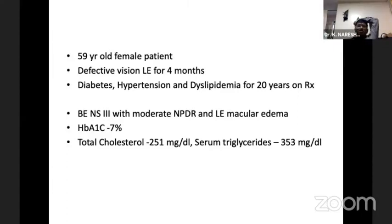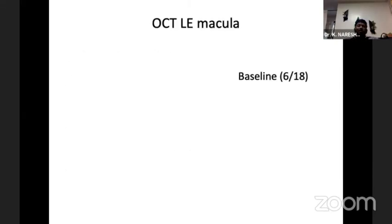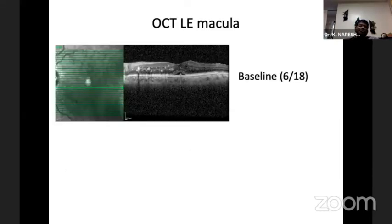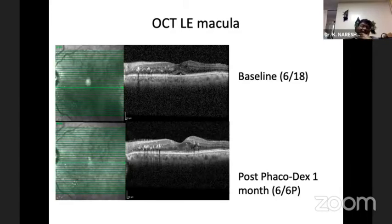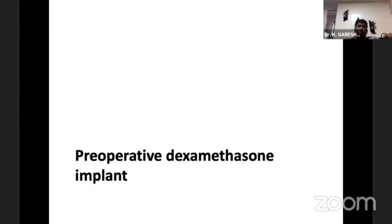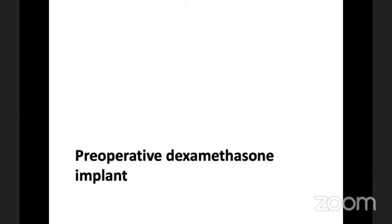Even though we say HbA1c less than 10 is preferable, in many of these cases above seven they don't do well following cataract surgery, and they will often have dyslipidemia and renal problems as well. One complication to be aware of: when planning pre-op dexamethasone implant injection, the implant was accidentally injected into the lens. The patient was taken for surgery next day, where the dexamethasone implant was released and pushed into the vitreous cavity, requiring a pars plana lensectomy with IOL implantation.